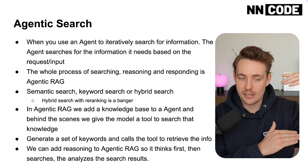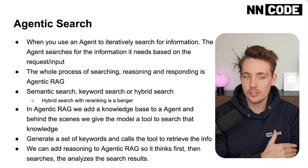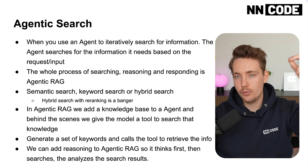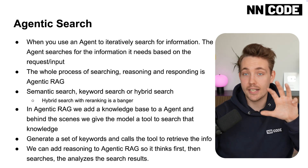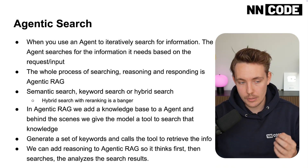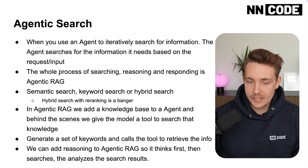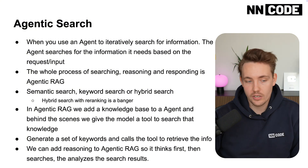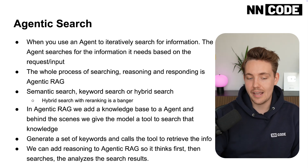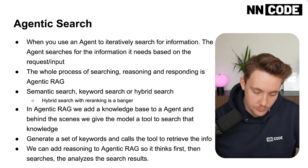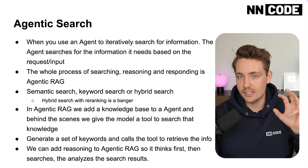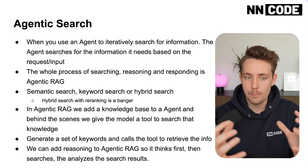Hybrid search combines vector search and keyword search, then you can add a re-ranker on top. The agent finds relevant documents, then a re-ranker — which could be another agent or the same one — re-ranks those documents by relevance. We take the most relevant documents, throw them into the LLM, and it generates a response. The reasoning step on top is what makes it agentic. We add a knowledge base to an agent and give the model a tool to search that knowledge — generating keywords, calling tools to retrieve information, thinking first, then searching, then analyzing results.